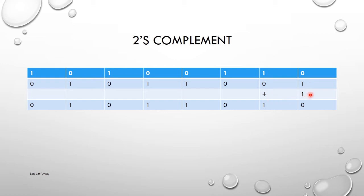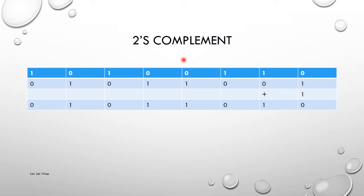Then add one. So: 1 plus 1 equals 2, which gives a 0 carry 1. Then 1 plus 0 plus carry 1 gives 1. The remaining bits carry through, giving zeros. The result is: 0 1 1 0 1 1 1 0. Now I have my two's complement — flip all bits then add one to get the two's complement.